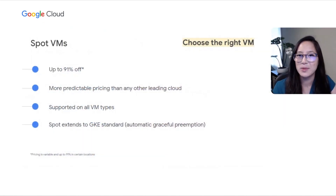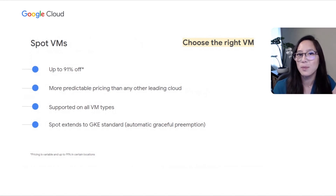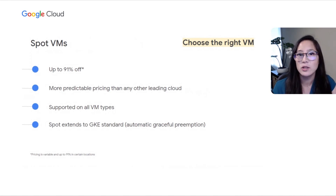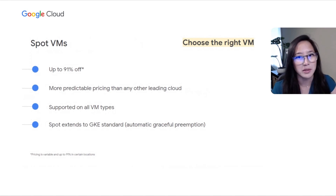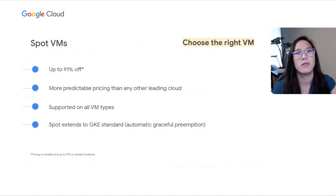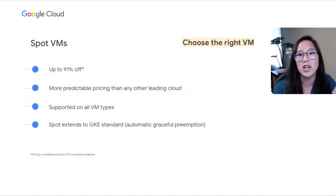Today, I'm excited to announce the launch of Spot VMs in preview. Spot VMs are enhanced preemptible VMs — excess Compute Engine capacity sold for up to 91% off on-demand prices. Availability and prices may vary. We provide more pricing predictability compared to Spot in any other leading cloud, offering a minimum guaranteed savings of 60% and guaranteed changes occurring no more than once a month.